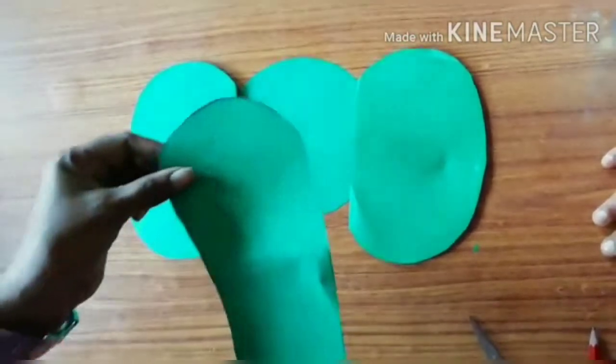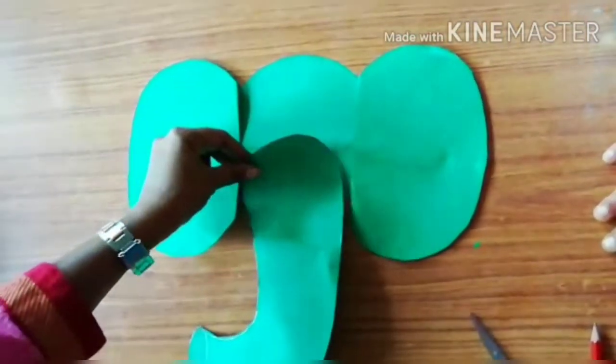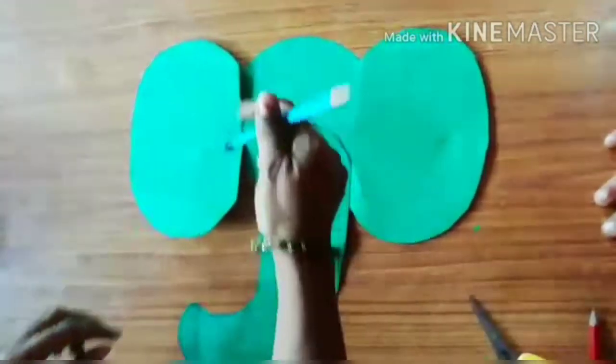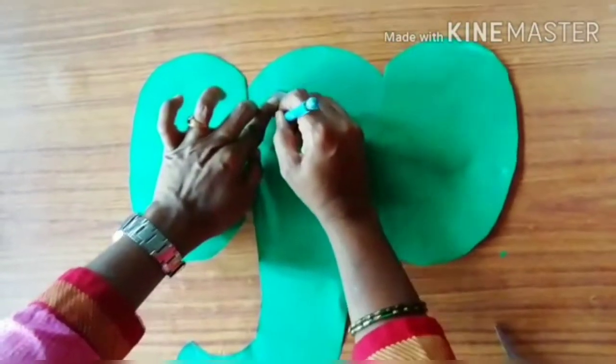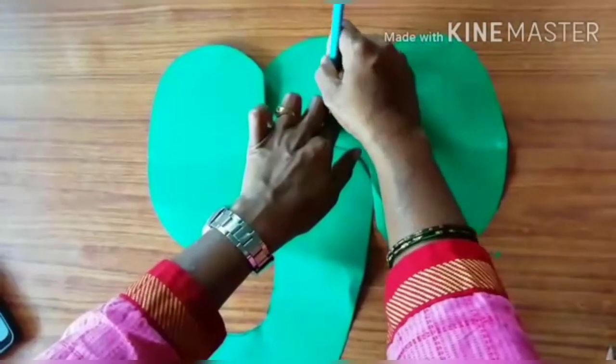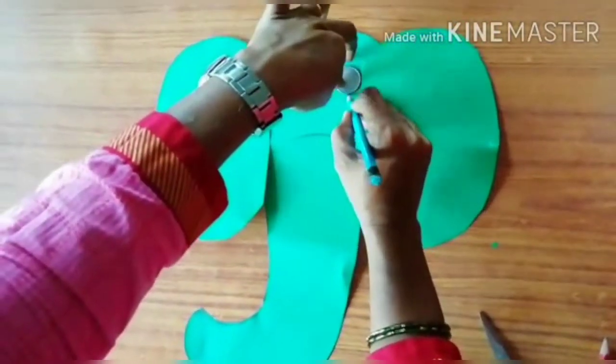Once everything is done, now we are going to make the eyes. Make a circle and again cut it.